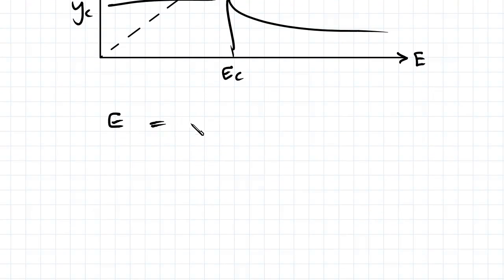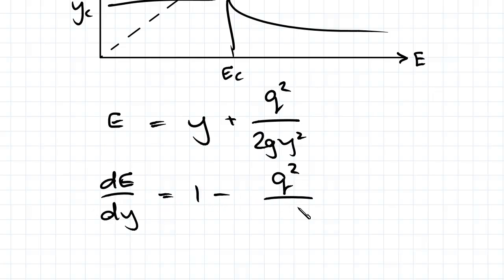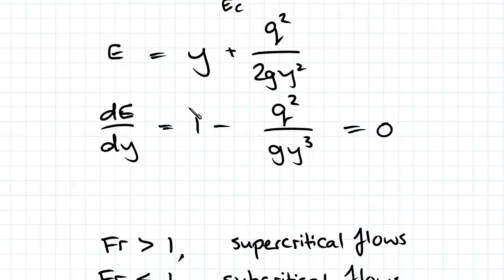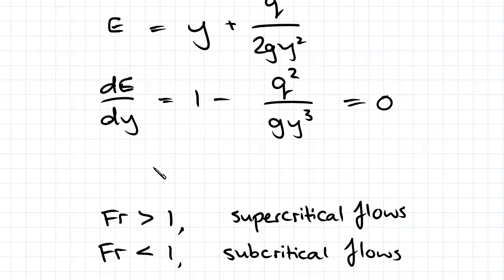So we've got our equation here in terms of y and we're trying to find dE/dy which equals 1 minus q²/(gy³), and we're solving equal to zero. That's how we get our yc which simplifies to (q²/g)^(1/3), and if we substitute yc into the equation here we get E equal to 3/2 yc.